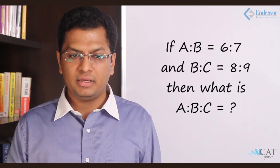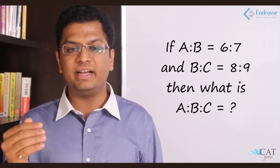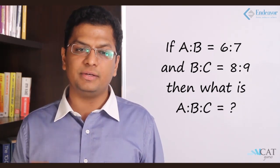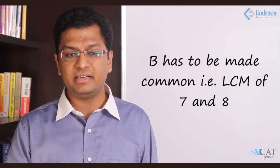Let's say A is to B is equal to 6 is to 7 and B is to C is equal to 8 is to 9. Then what is A is to B is to C? If you look, there are two ratios individual of each other: A is to B and B is to C. A is to B is nothing but 6 is to 7, B is to C is 8 is to 9. B is the common link but here the common link is not equal. Here it is 7, at the other location it is 8, so we will have to make it common. We will have to take an LCM of both of them. If we take an LCM it becomes 7 and 8, which is 56.